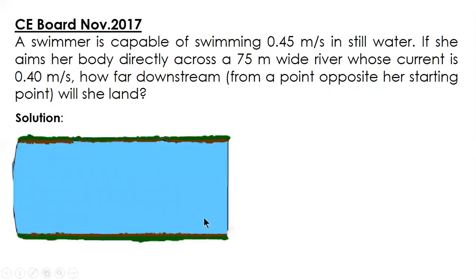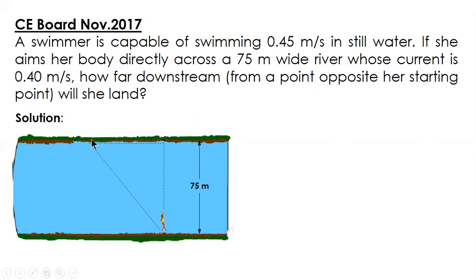Suppose this is the river and it's 75 meters wide. The swimmer is swimming directly across the river. However, the current is also carrying her downstream. The resultant vector shows the actual direction the swimmer travels. We need to find D — how far downstream from the point directly opposite her starting position she will land.